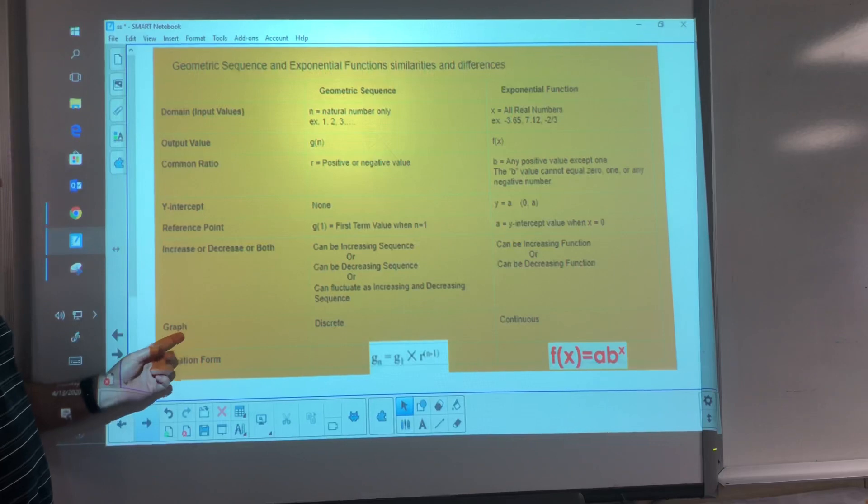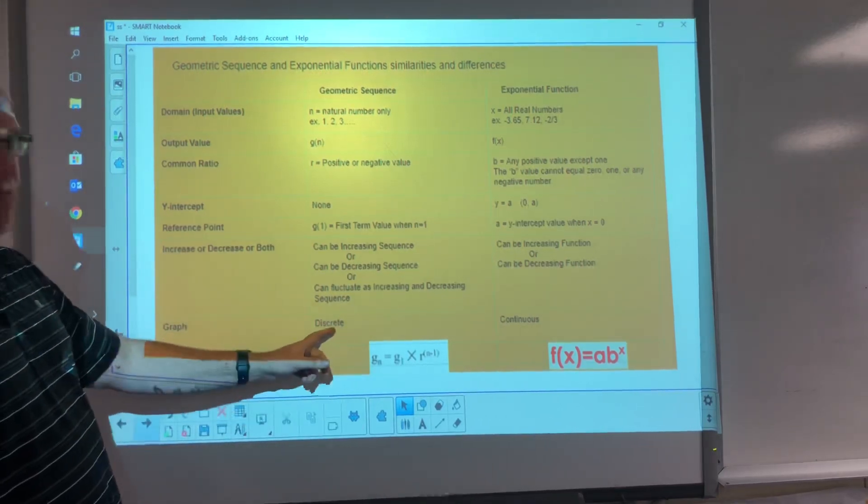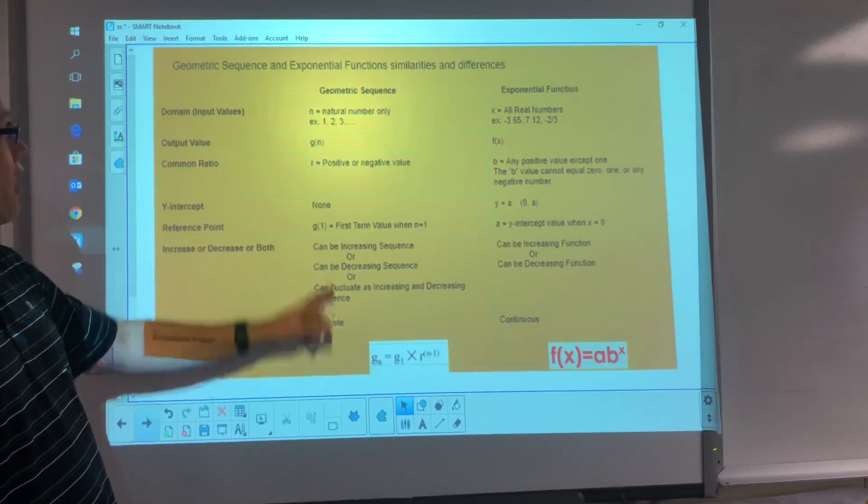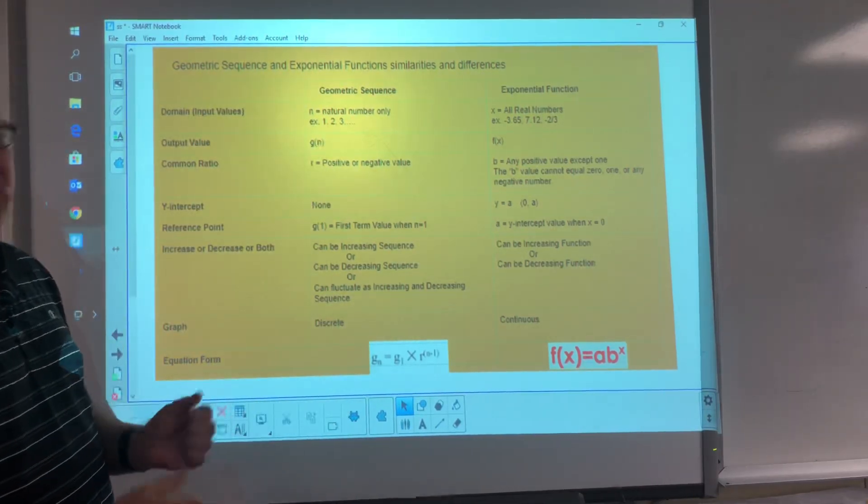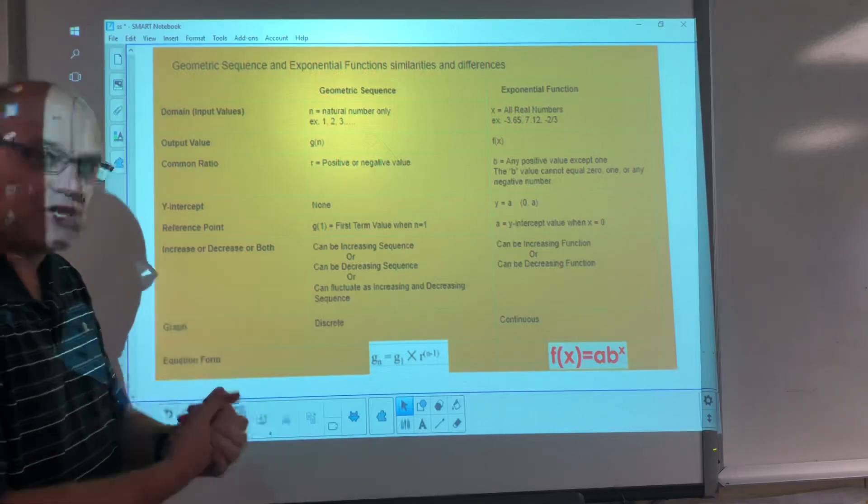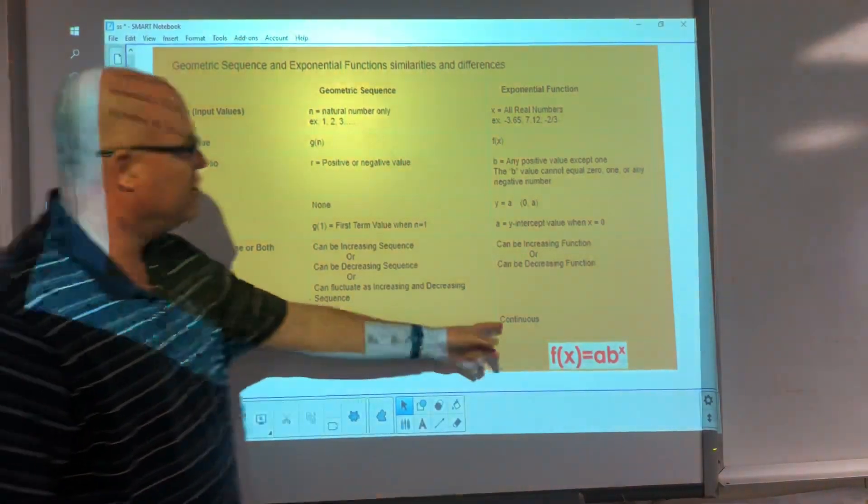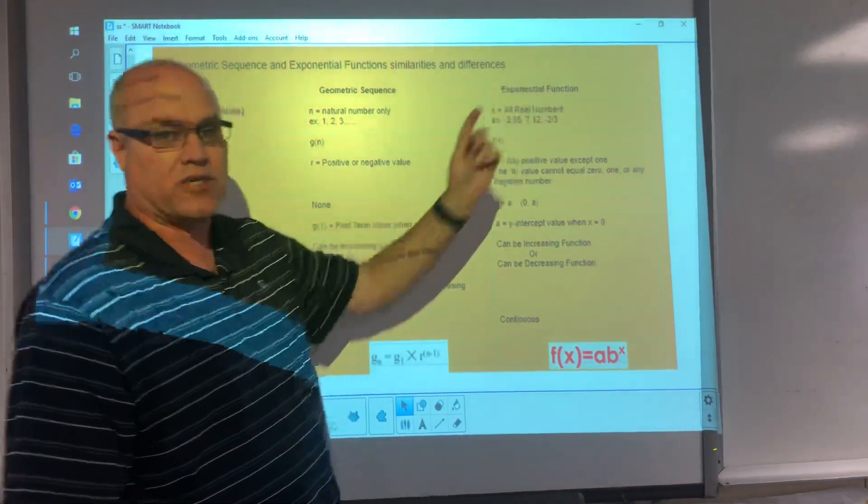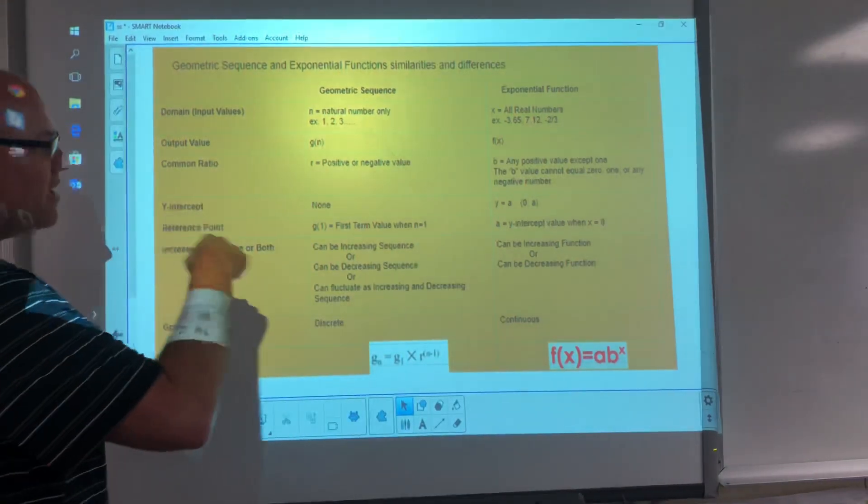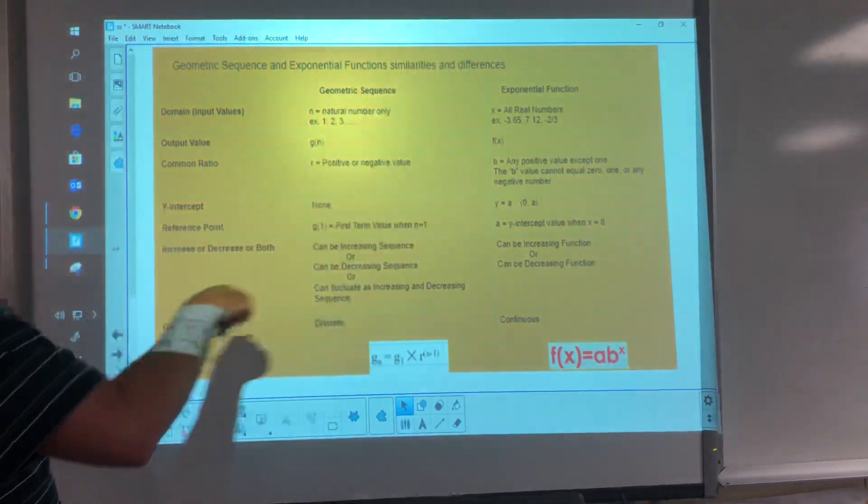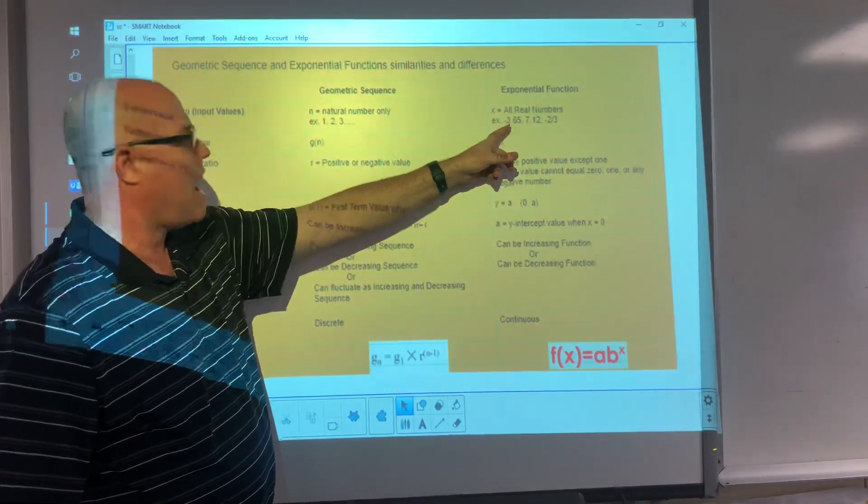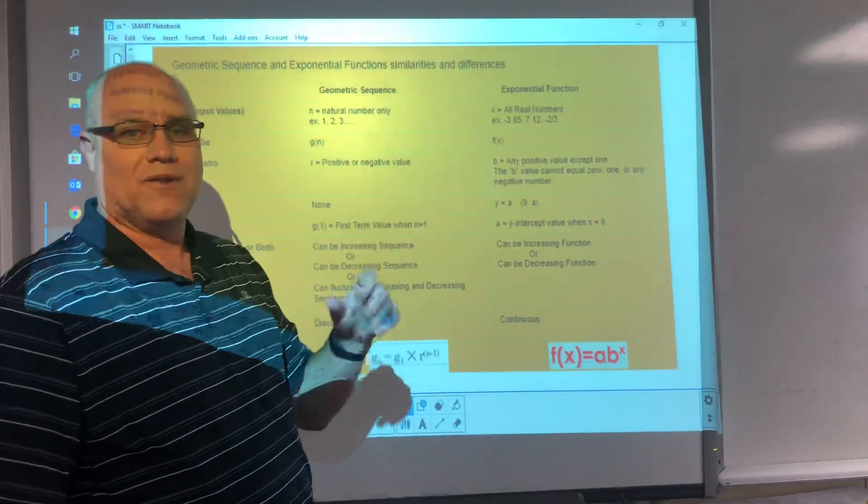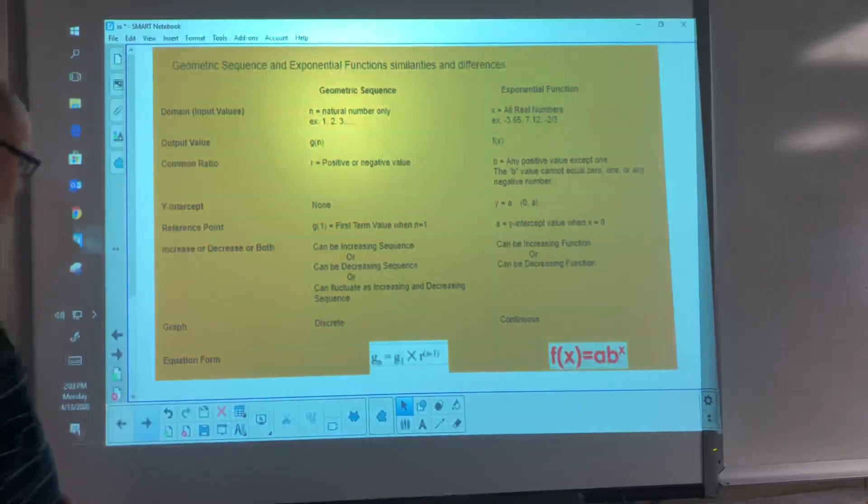Then the graphs. We'll be looking at the graphs the next few days. Discrete graphs for our geometric sequences, right, discrete points, because you can't have 1.5 as an n value. It's n is 1, it's 2, it's 3. Continuous curve for exponential function, again, because it includes all the real numbers for x. So it could be the negative 3.65. It could be 7.12. So that's why it's a continuous curve.